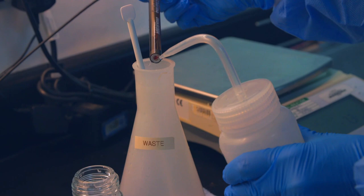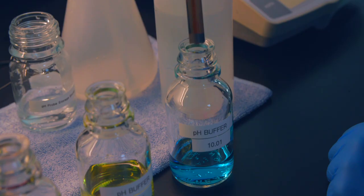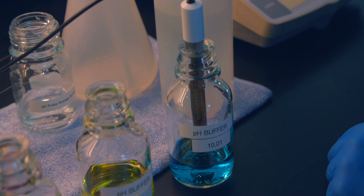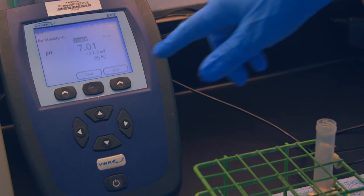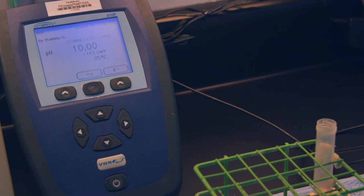Place the probe into the pH 10.01 buffer and gently stir to remove any bubbles from the tip of the probe. Press the read button, wait for the screen to say stable, and take note of your pH value. The pH meter is now calibrated and the calibration has been verified. Your pH meter is now ready to use.